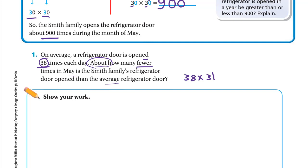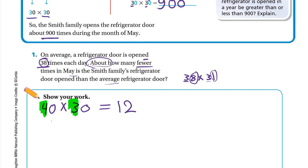He said 'about,' so we will estimate. 38 rounded to the nearest 10: to the right of the 3 we have 8, which is a strong digit, so the 3 becomes 4 — that's 40. Multiply by 31: to the right of the 3 we have 1, which is a weak digit, so we keep it 30. So 40 × 30. We multiply 4 × 3, which is 12, and we have two zeros in the factors.